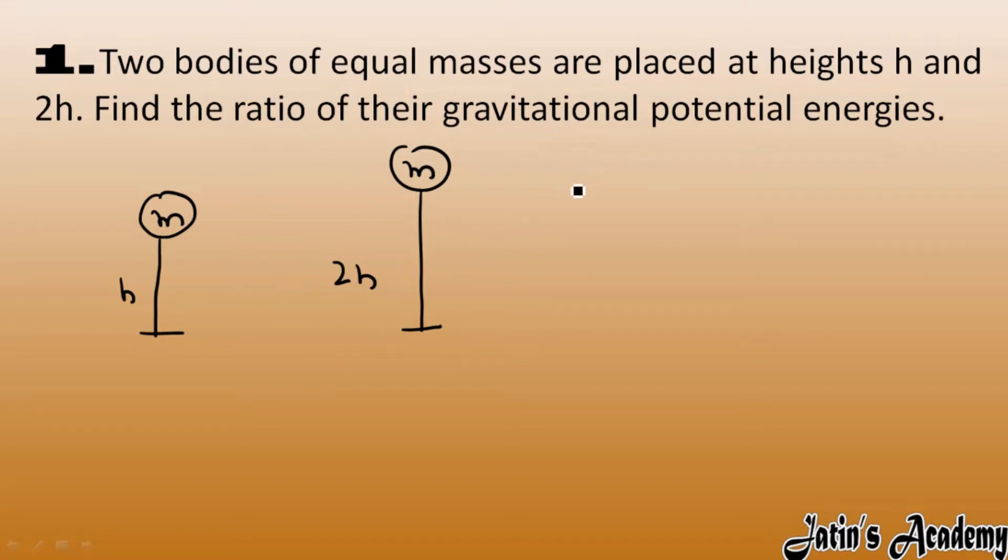The potential energy formula is mgh. So potential energy of first case over potential energy of second case equals mass of first body times g times height of first body, over mass of second body times g times height of second body.